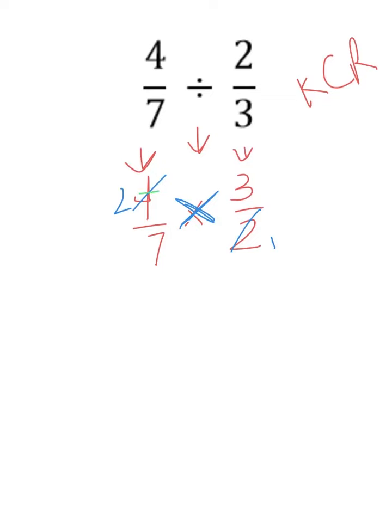Now I multiply straight across the top, so 2 times 3 equals 6, and across the bottom, 7 times 1 equals 7, and my answer is 6 sevenths.